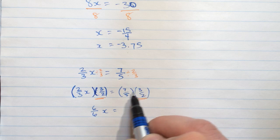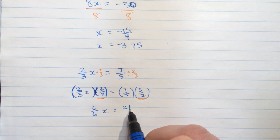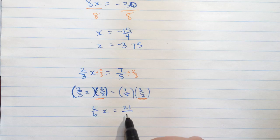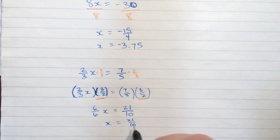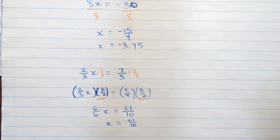And over here, I have, let's see, 7 times 3 is 21. 5 times 2 is 10. So again, rewriting this, that's the same as x equals 21 over 10, or you could call that 2.1 if you like.